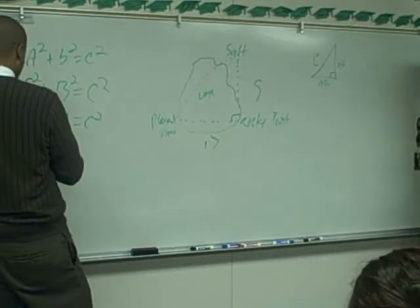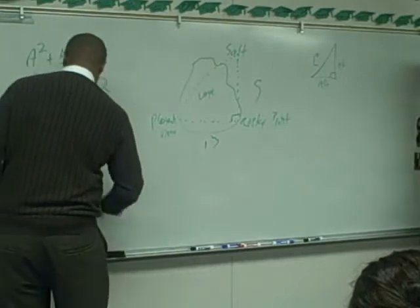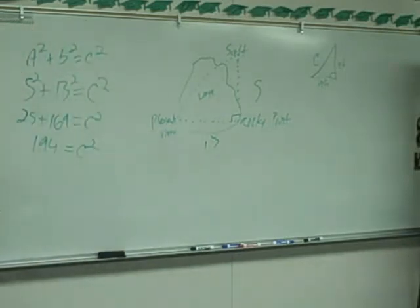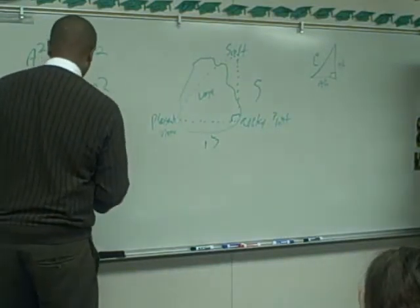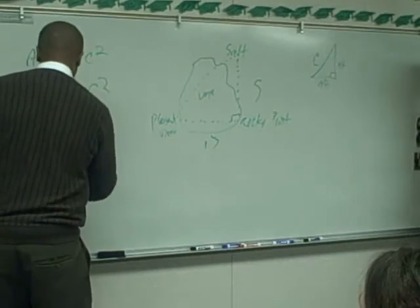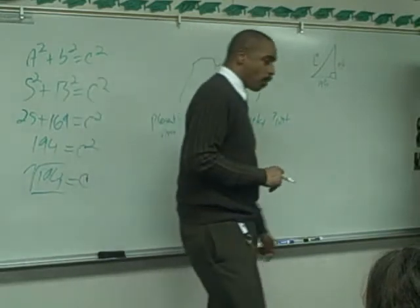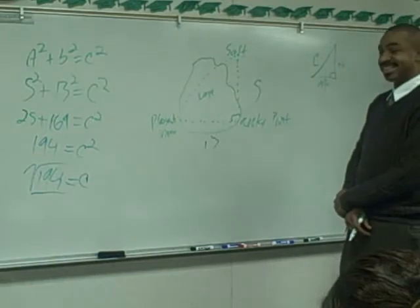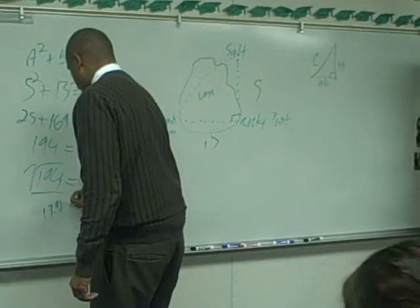169 plus 25 is what? 194. So C squared equals 194. So if C squared equals 194, then just plain old C equals what? The square root of 194. Who knows what the square root of 194 is? It's 13.928. So rounded off to 14.